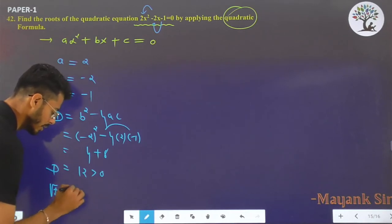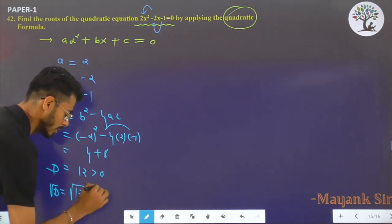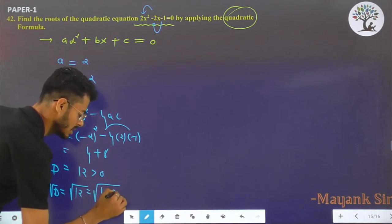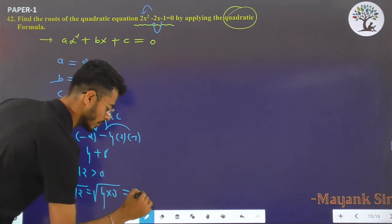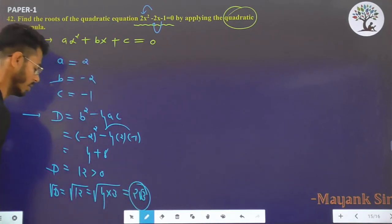Square root of D, that is 12. 4 times 3 is 12, value of square root of 4 is 2. So 2√3 is the value of √D.